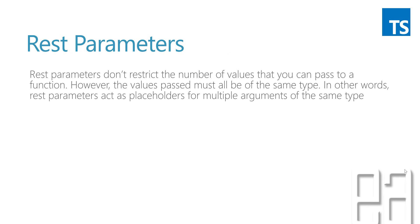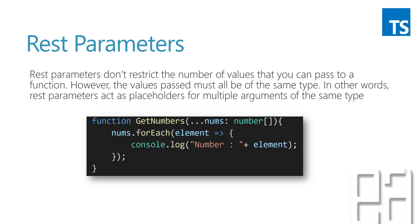Rest parameters don't restrict the number of values you can pass to the function; however, the values passed must all be of the same type. In other words, the rest parameter acts as a placeholder for multiple arguments of the same type. The rest parameter declaration looks like this: a function named `getNumbers` with three periods (`...`) followed by `nums` of type `number[]`. Then we use a `forEach` loop to iterate through all the values in that number array.